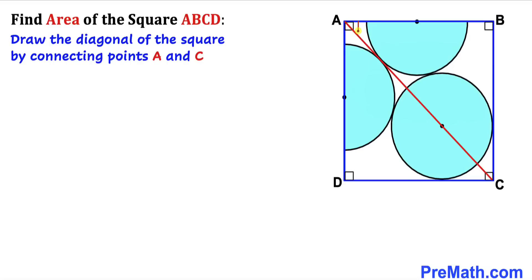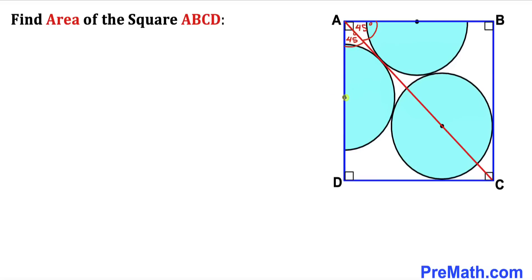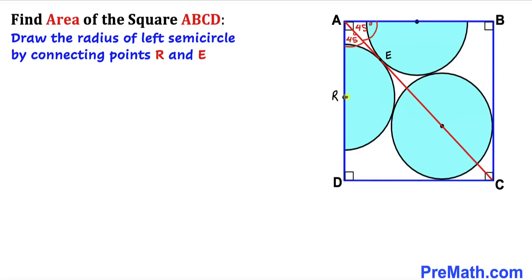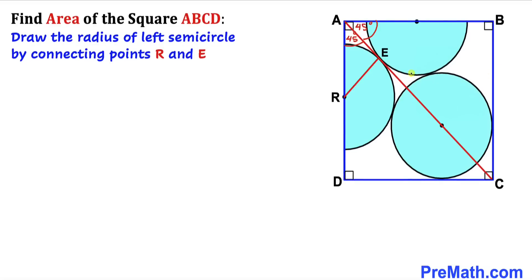We know the whole corner angle is 90 degrees, so this diagonal means each half is 45 degrees. Let me call the center of this semicircle R and the point of tangency E. Connecting R to E gives us the radius of the semicircle, which is 1.